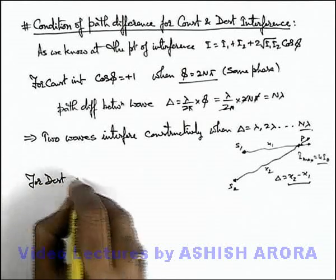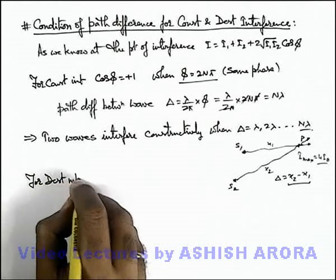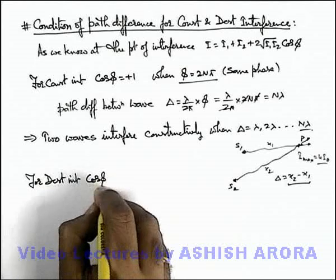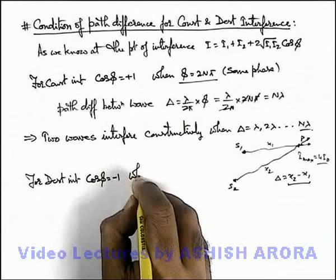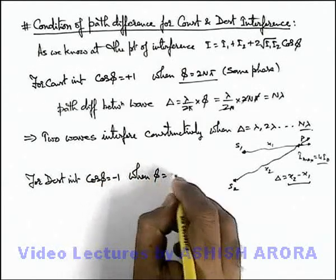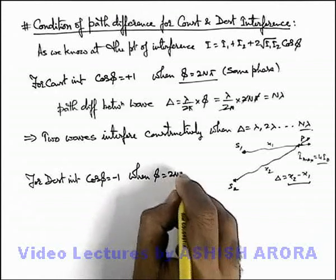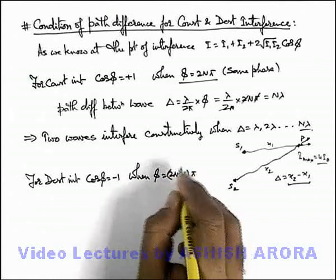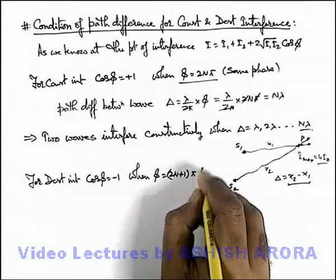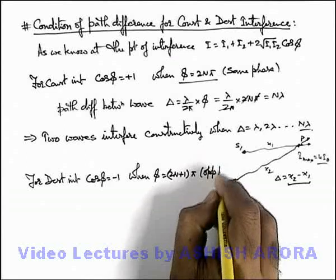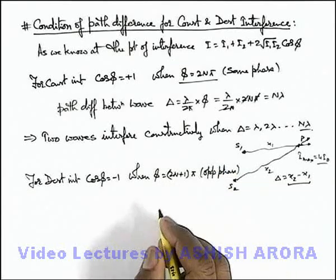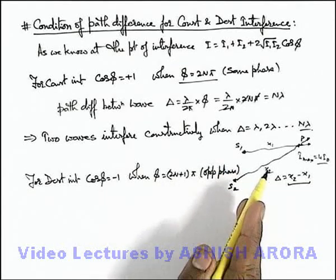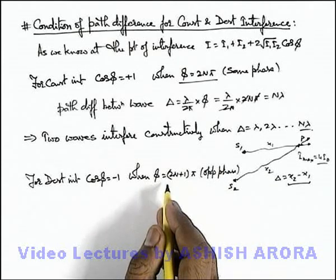Similarly, for destructive interference, the value of cos φ is minus 1, and it happens when the phase difference is (2n+1)π — that is, an odd multiple of π — which corresponds to opposite phase oscillations. When the 2 waves superpose in opposite phase at a point, destructive interference takes place.